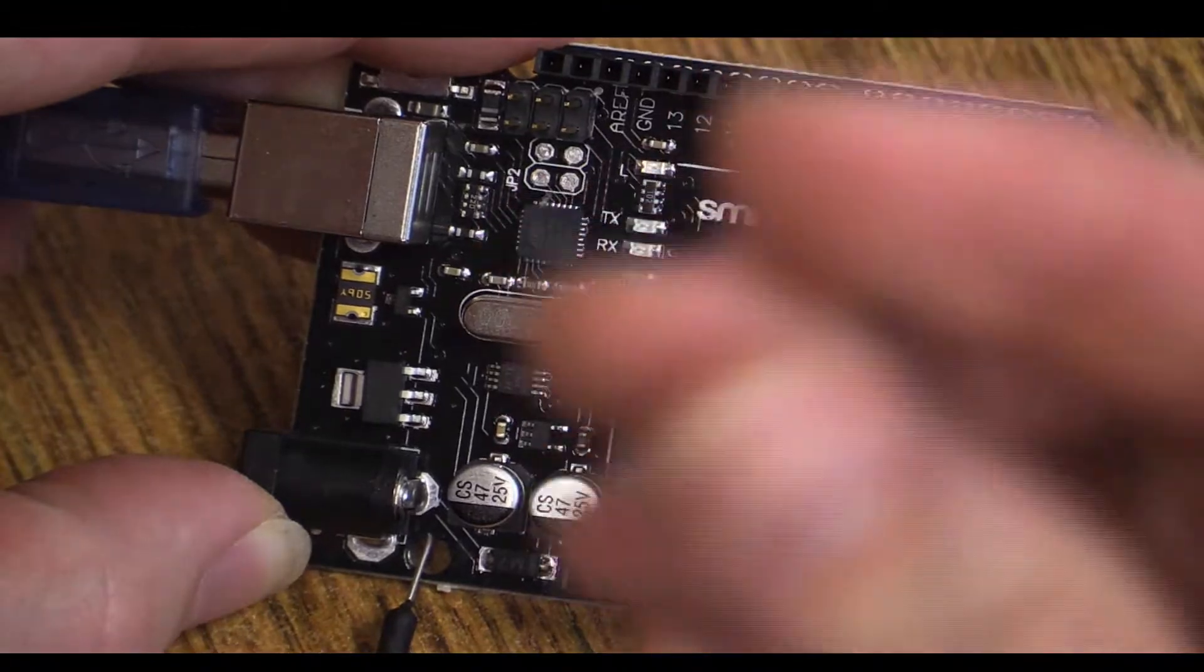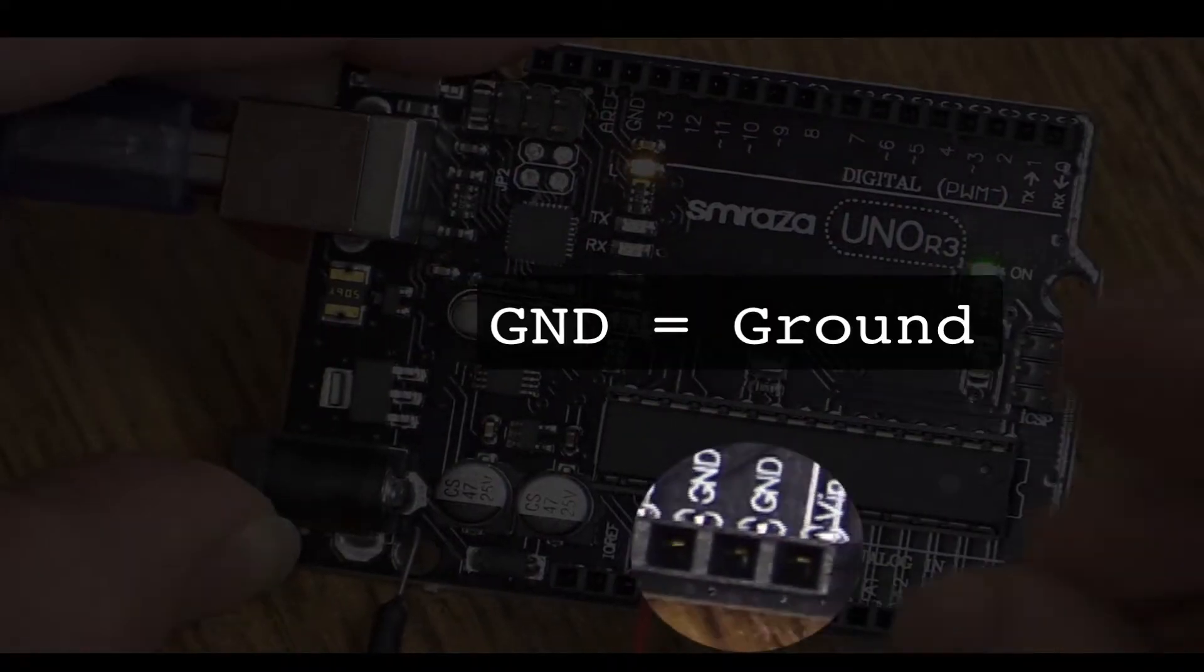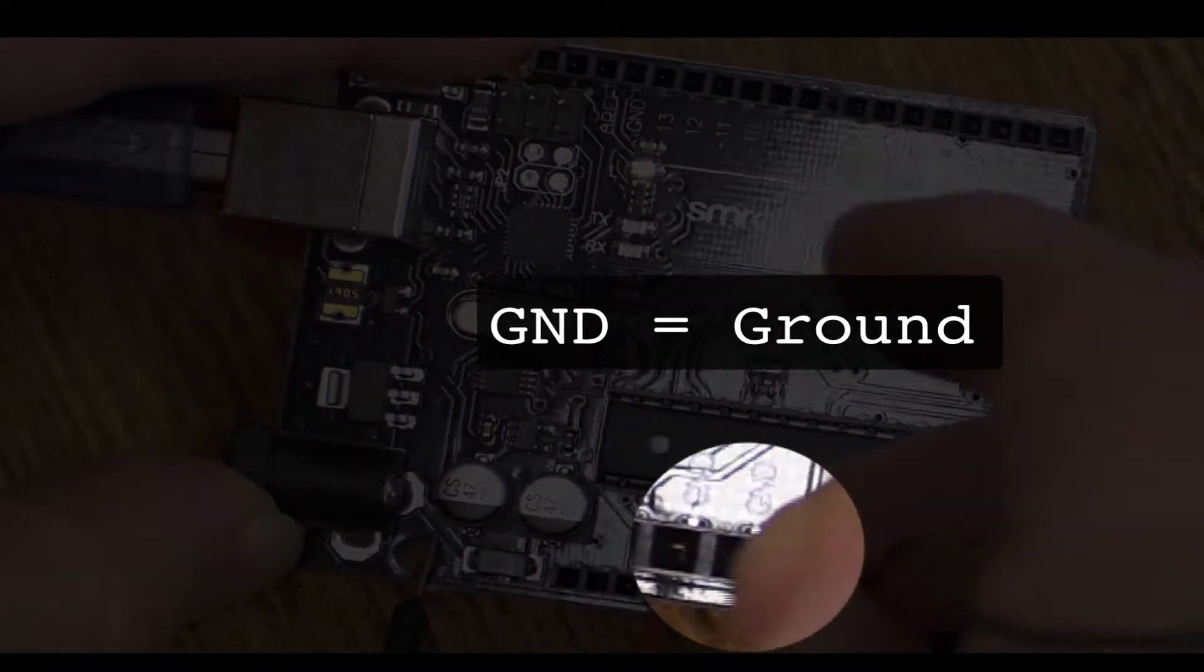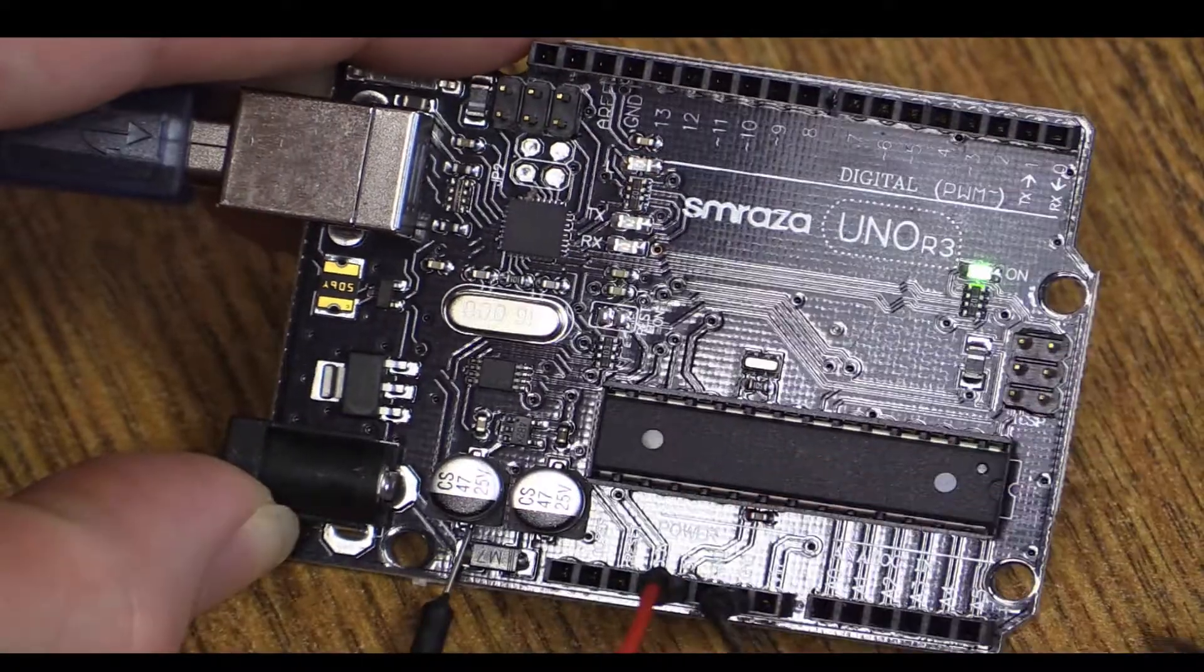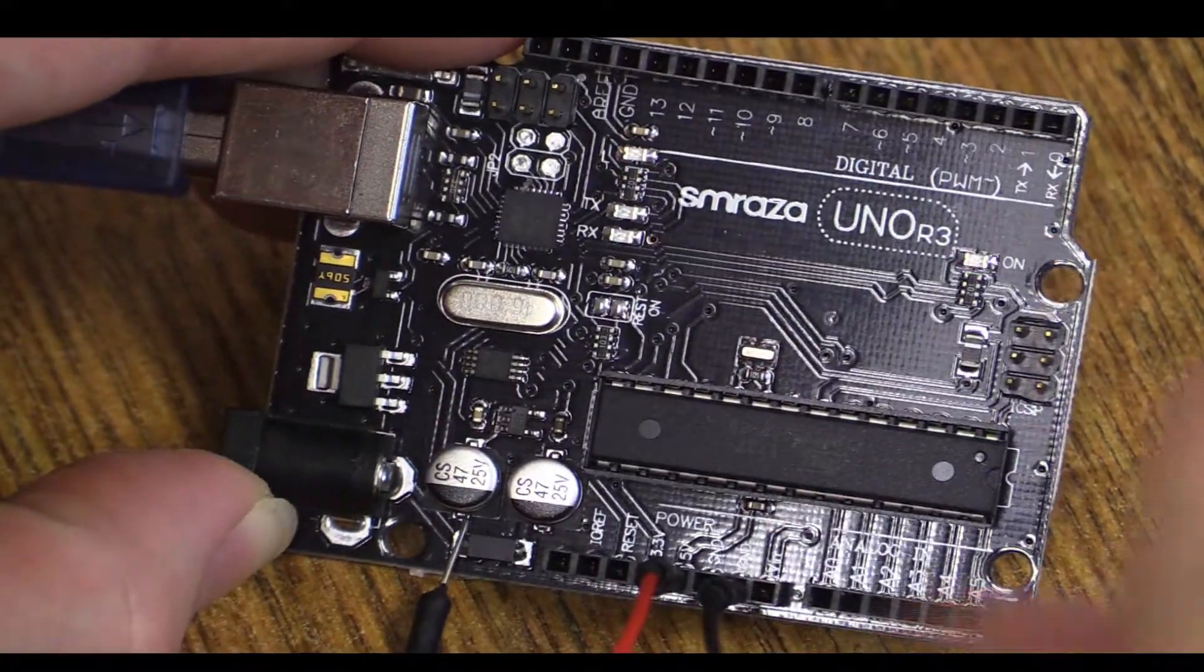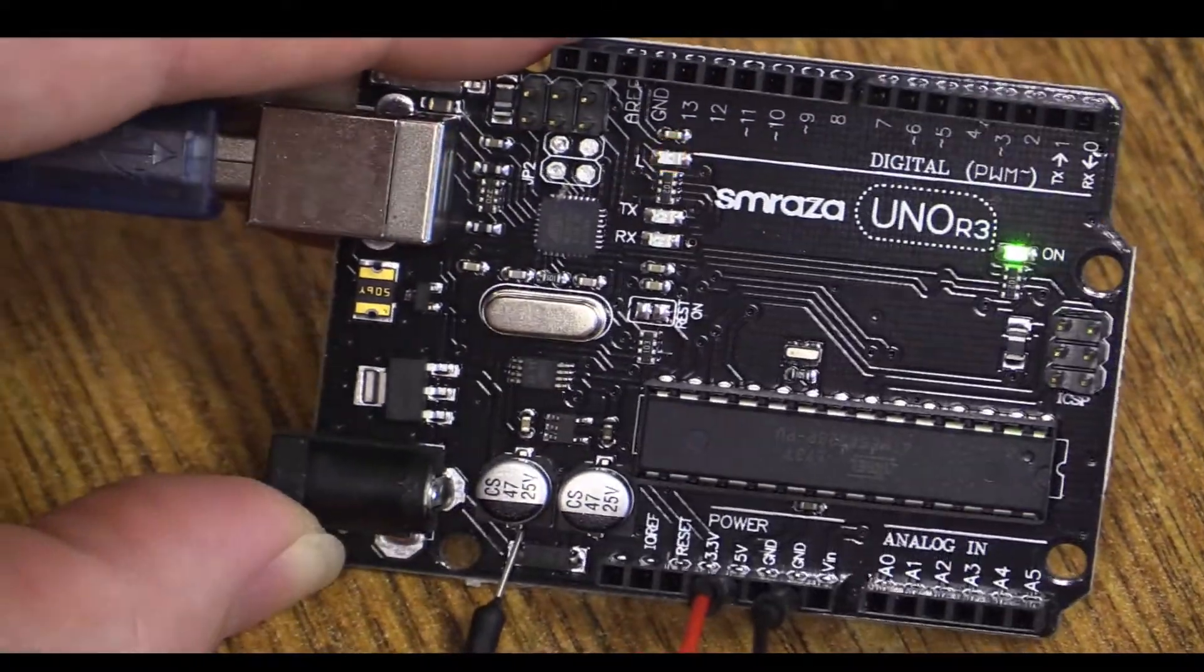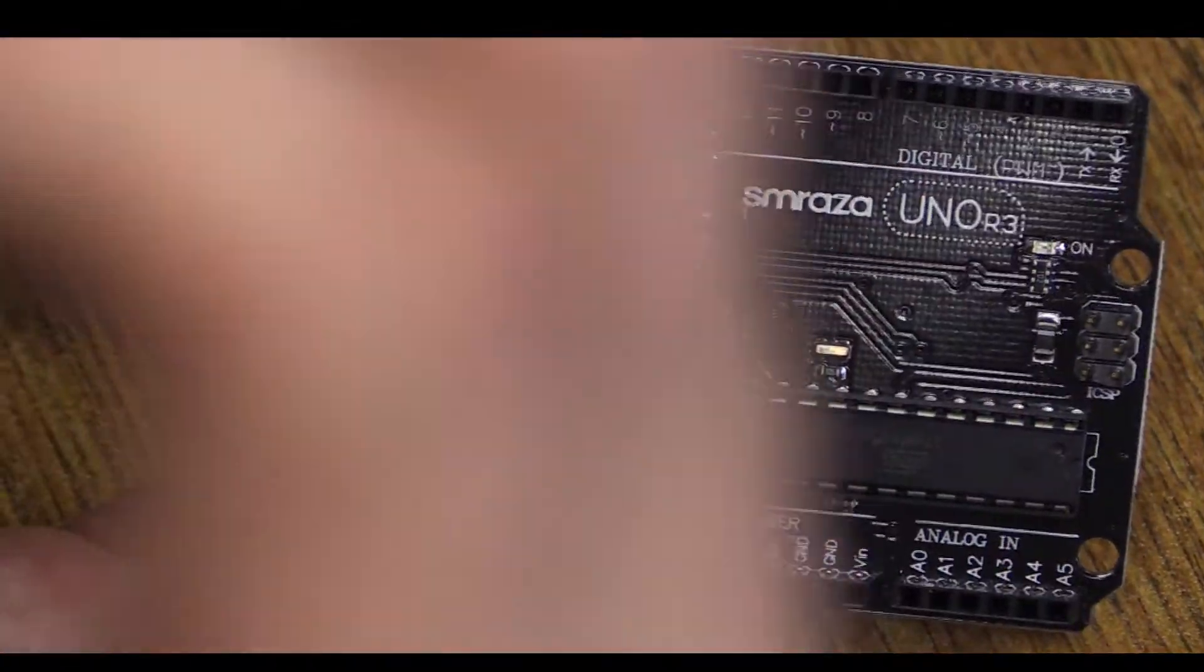We use this black wire to get the ground. Every circuit has power and it's got to come back to ground for it to make the full circuit of the thing we're trying to do. That is what we need from the Arduino board.